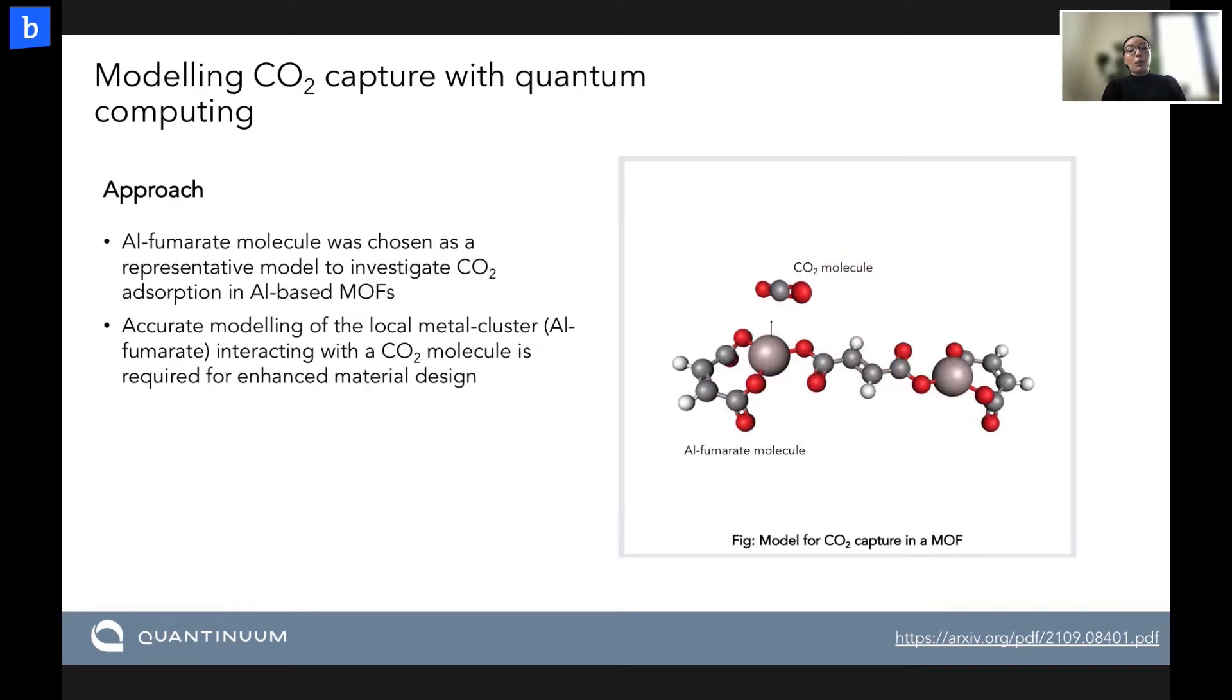So in terms of our model, we chose the aluminium fumarate model, which is shown here. And this was picked as a representative model for the larger MOF structure. And this was chosen because it's known to be a building block, which is found in water stable MOF structures already. So we know that this makes up the framework and we're going to use this to simulate what these interactions are going to be. We want to model the key interaction of this metal site with an incoming CO2 molecule and moving forward to try and understand how that governs the carbon capture capabilities.